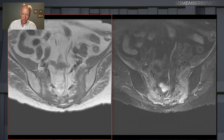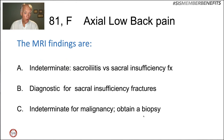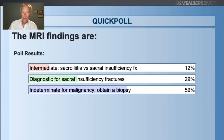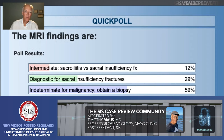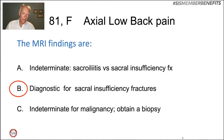Based on the MRI findings, our question is: A — findings are indeterminate, could be sacroiliitis or a sacral insufficiency fracture; B — diagnostic for sacral insufficiency fractures; or D — we must consider malignancy given the history and should obtain a biopsy. The majority are concerned about malignancy — that is always something to consider. But the answer here is fairly clear cut from a diagnostic radiology standpoint: these images are diagnostic for sacral insufficiency fractures.